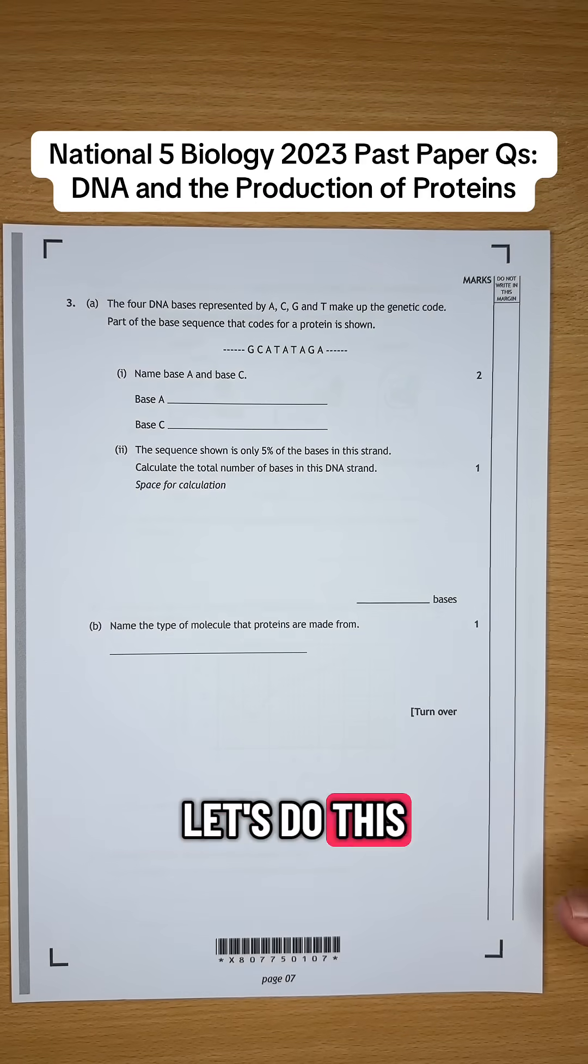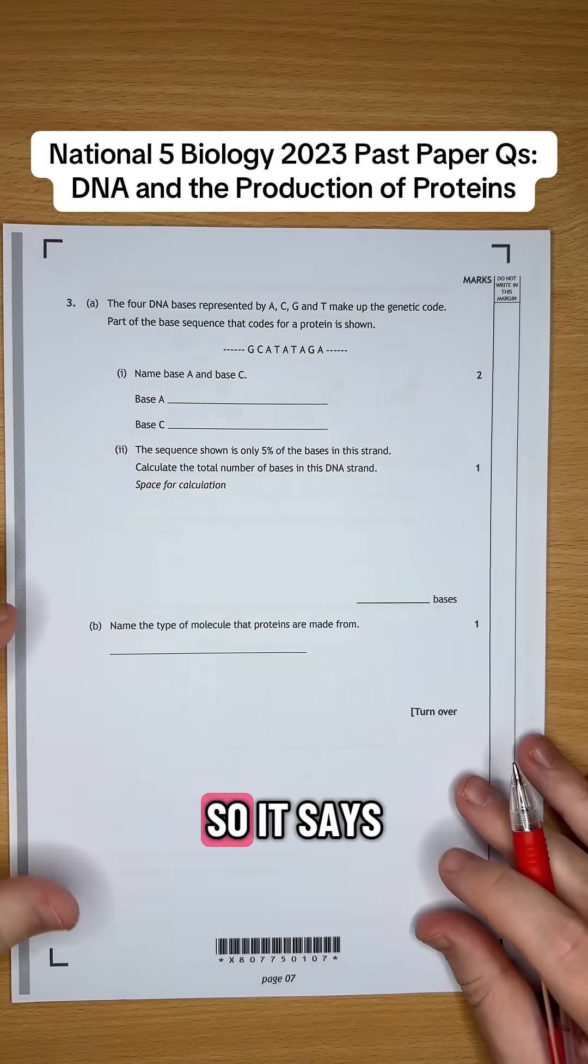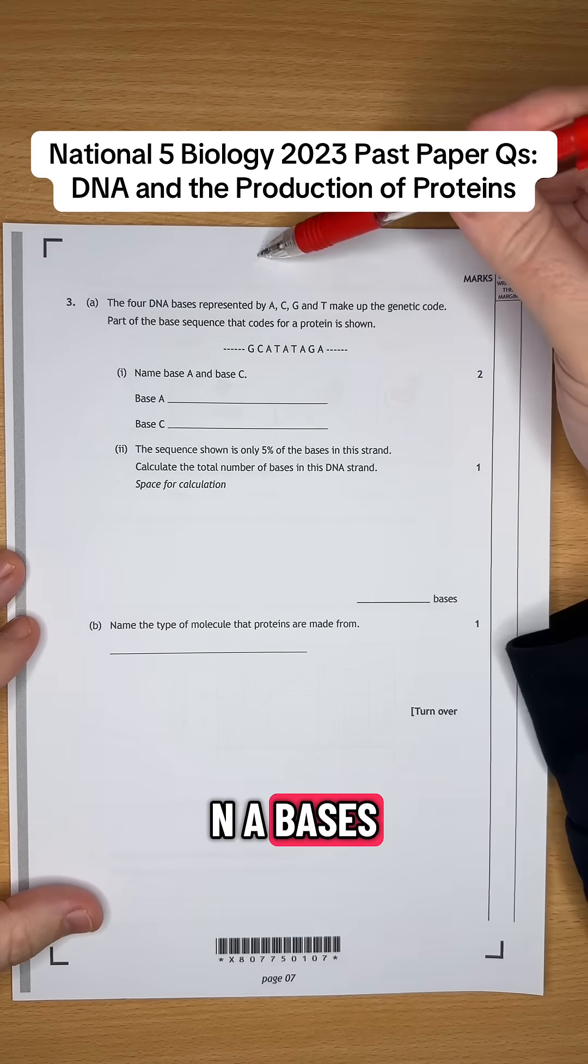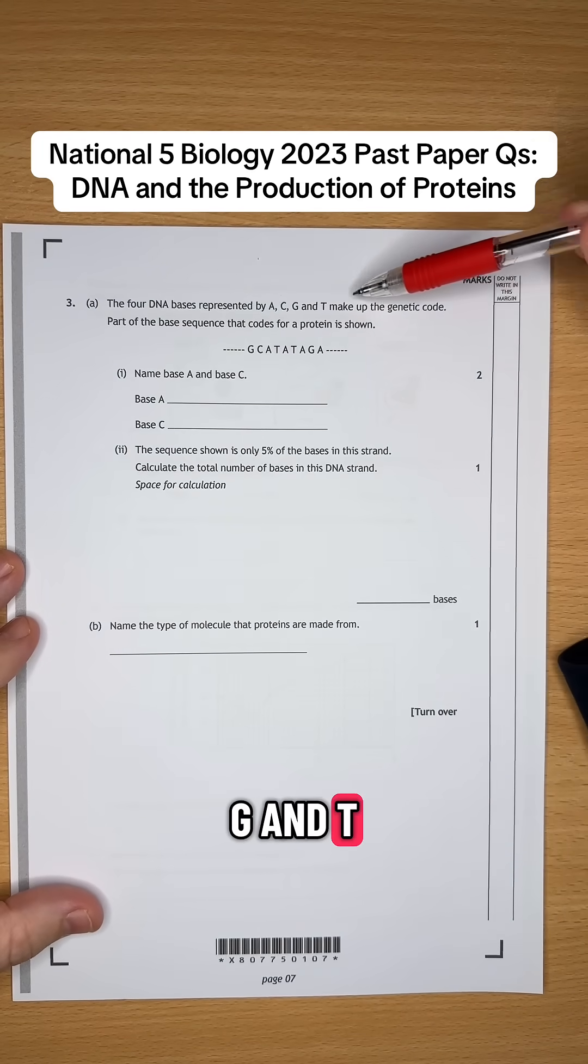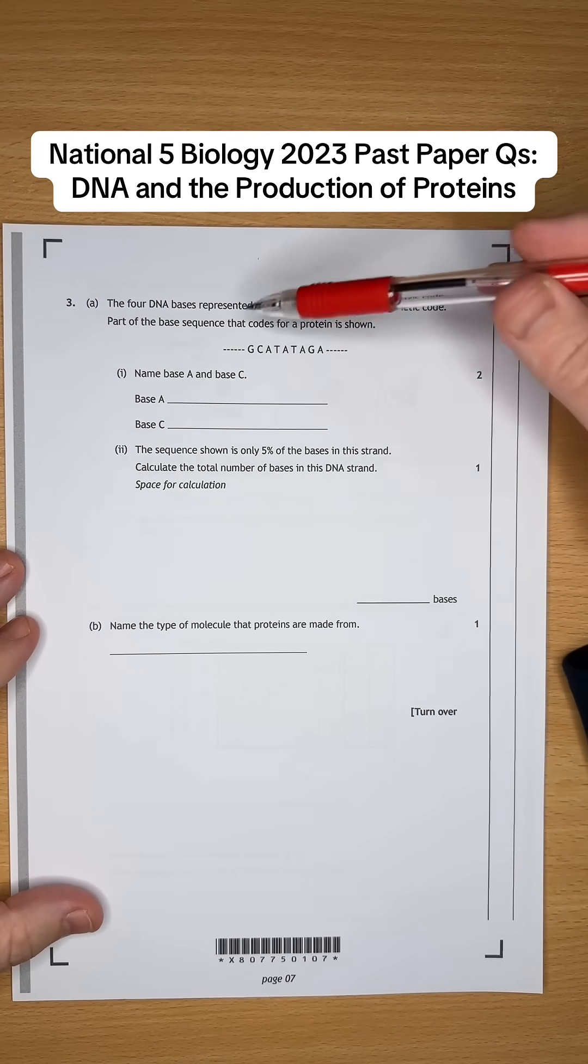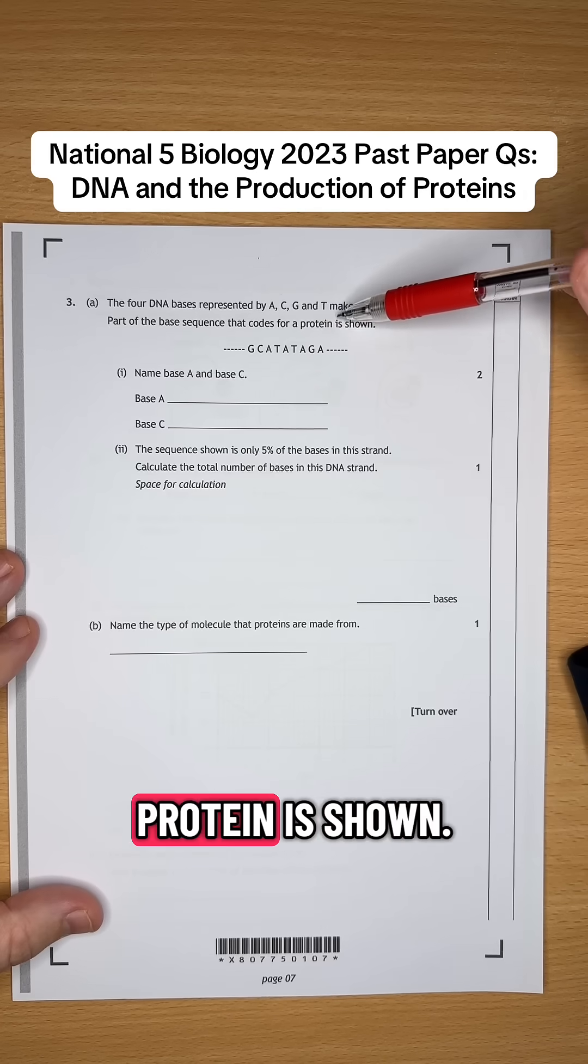National 5 biology students, let's do this past paper question together. So it says, the four DNA bases represented by A, C, G and T make up the genetic code. Part of the base sequence that codes for a protein is shown.